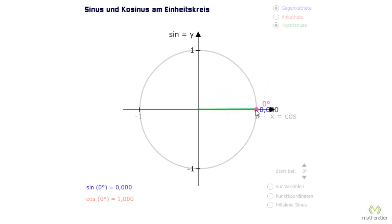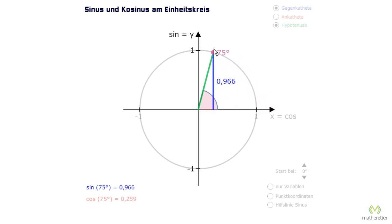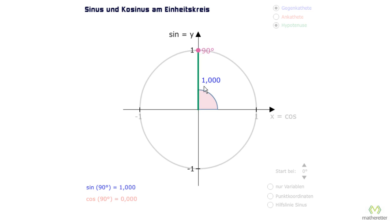Let us switch to sine now. Sine of 0 degrees is 0, because if we look to the left, the y-axis is at 0. The sine of 90 degrees is 1, because when we go up, the blue line is getting longer until it reaches 1. Sine of 90 degrees is 1. And if we now go to 180 degrees, what do we have for the sine value? It's 0.